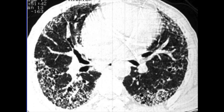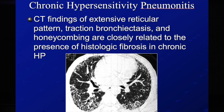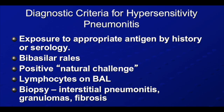The findings are similar to what you get in a UIP pattern. The only thing in HP that you should remember is to look if there are any areas of mosaic attenuation. If you have a UIP pattern and you have black areas — that means there is some amount of air trapping. Usually air trapping and UIP pattern points towards chronic HP. This is increasing because of pigeon exposure and in rainy season because of fungus in small rooms — all these are exposures towards allergens.